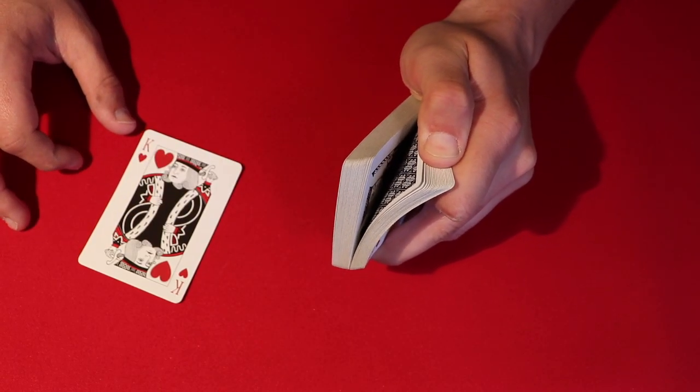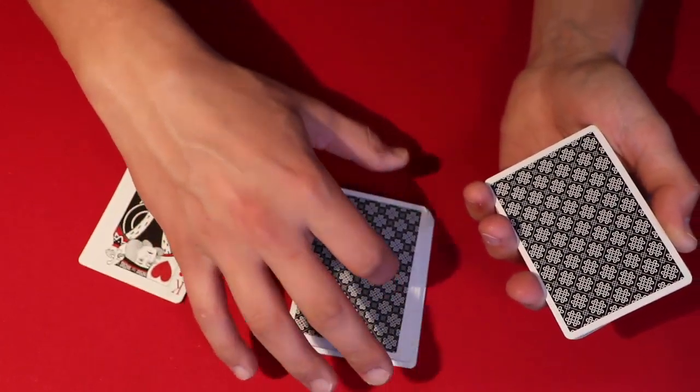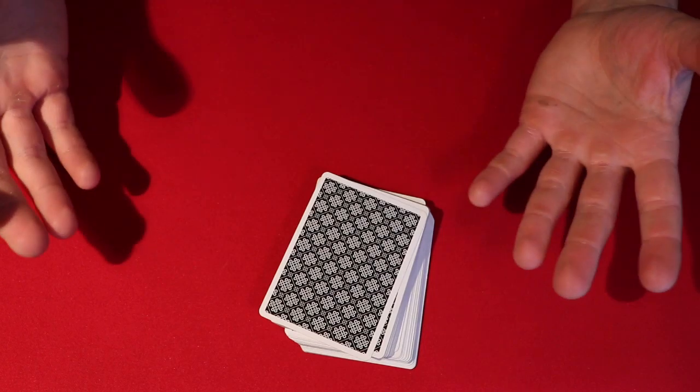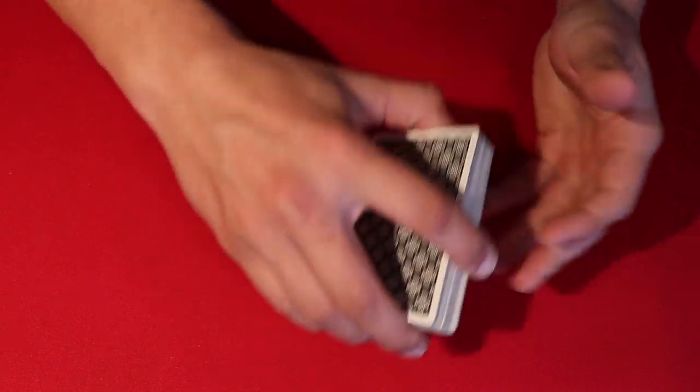So anywhere in the deck they happen to stop, you tell it's a completely fair break. You take their card, you put it directly in the middle, wherever they said stop. You snap your fingers and just like that guys.